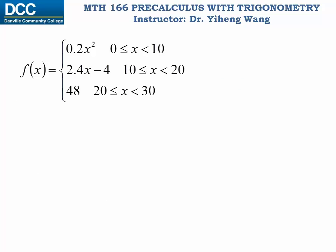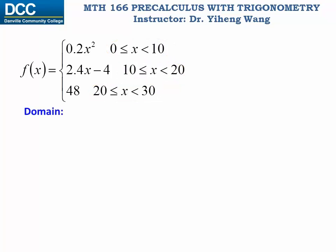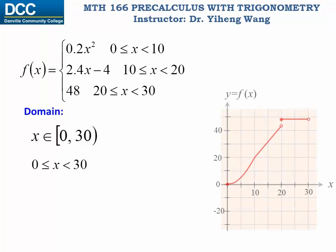For a piecewise function, the domain is normally very easy to determine — just look at the intervals specified in the definition, which tell you for what x intervals the function is defined. For this function, we combine those x intervals to get the domain: x belongs to the interval from 0 to 30, including 0 but not including 30, or simply write 0 ≤ x < 30. To determine the range, we can sketch the graph of the function.